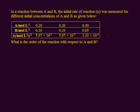In a reaction between reactant A and B, let me write down the reaction: A plus B equals product. The initial rate of reaction was measured for different initial concentrations of both reactants. You can see that the concentration of reactant A and reactant B is given, along with the rate of reaction. The question asks: what is the order of reaction with respect to reactant A and with respect to reactant B?